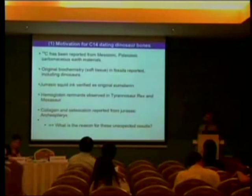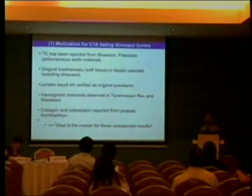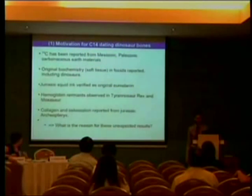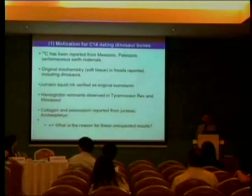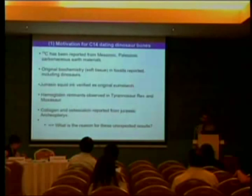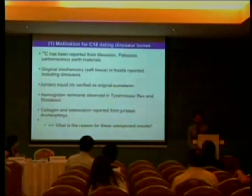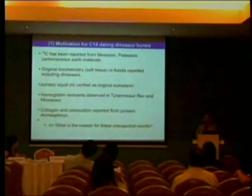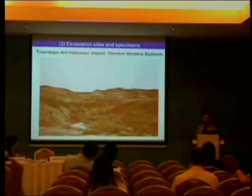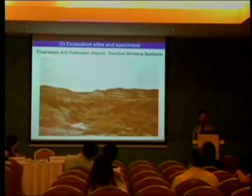C-14 has been reported from Mesozoic, Paleozoic, and carbonaceous Earth material. Original biochemistry and soft tissue has been reported in fossils including dinosaurs — this is the work of Mary Schweitzer et al. and others. We also have a report of Jurassic squid ink verified as original eumelanin. Hemoglobin remnants have been observed in Tyrannosaurus rex and in the Mosasaur. Collagen and osteocalcin have been reported from a Jurassic Archaeopteryx. What is the reason for these unexpected results? This was one of our basic motivations for pursuing these C-14 experiments. This gives you an impression of a Triceratops and Hadrosaur deposit in Glendive, Montana Badlands, where we performed excavations.